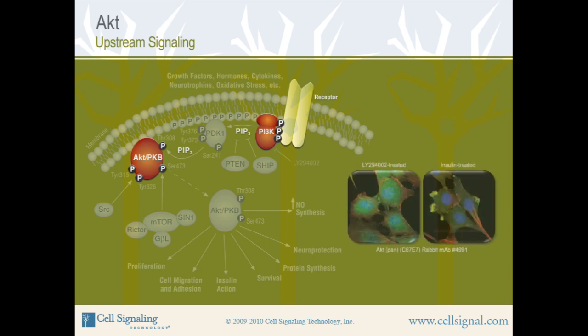The image here shows confocal immunofluorescent analysis, or IFIC, of C2C12 cells that have been treated with either the PI3K inhibitor LY-294002 or with insulin, using the AKT pan-rabbit monoclonal antibody, product number 4691. The AKT pan-antibody has been labeled green.